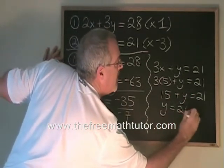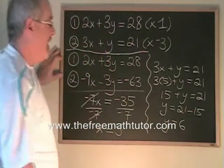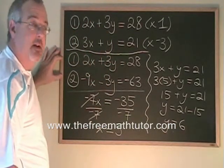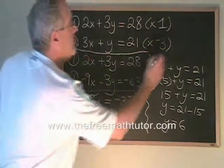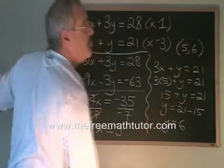Y is equal to 21 minus 15. Y is equal to 6. We have our answer. The point of intersection of these two straight lines is going to be 5, 6.